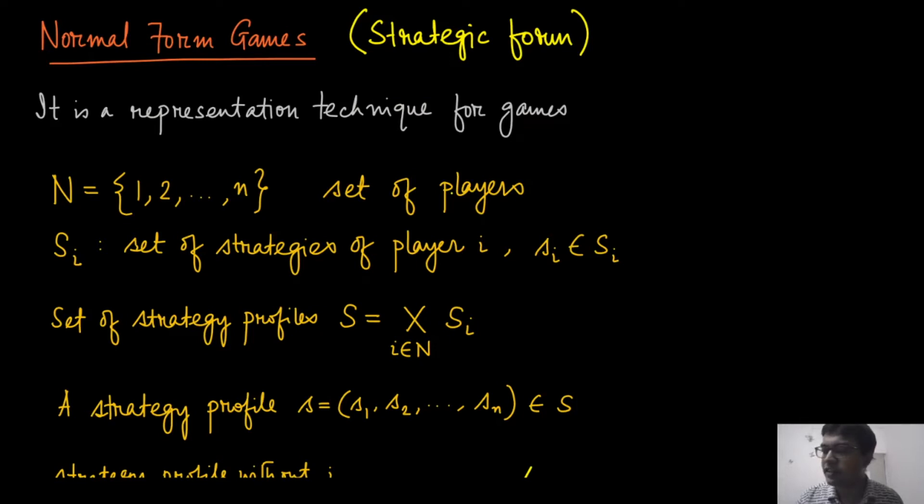So we first define the set of players. By N we define n different players, and by S_i we define the set of strategies for player i. We have already seen an example and we will see another example very soon. The lower case s_i denotes an element of S_i, which is one specific strategy for player i.